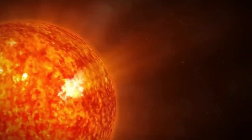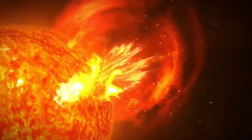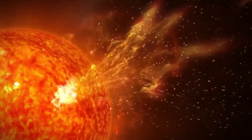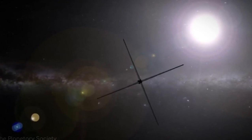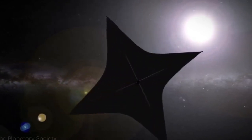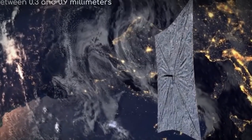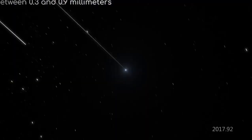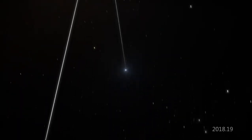Oumuamua, hurtling towards our star at a relative speed of 16.36% or 23 million miles per hour, remained undiscovered for over a month. On October 19, 2017, University of Hawaii astronomer Rob Weryk stumbled upon Oumuamua in observations conducted by the Asteroid Tracking Panoramic Survey Telescope and Rapid Response System, Pan-STARRS. At that moment, Oumuamua was positioned 21 million miles away from Earth, eventually approaching as close as 15 million miles.